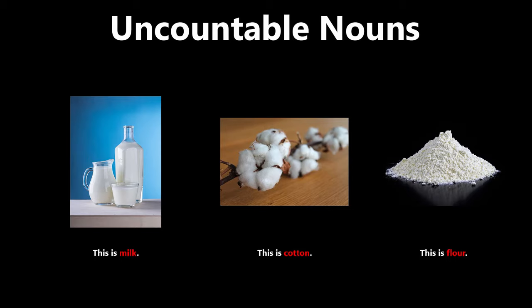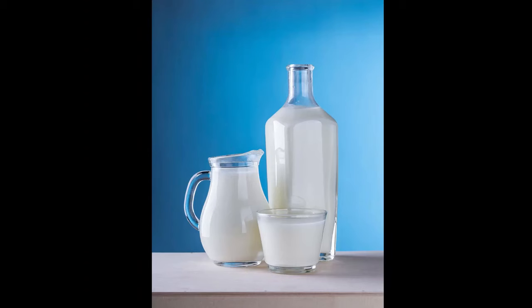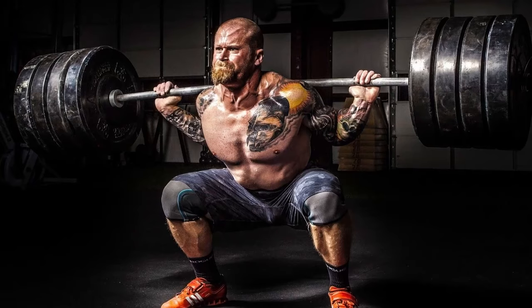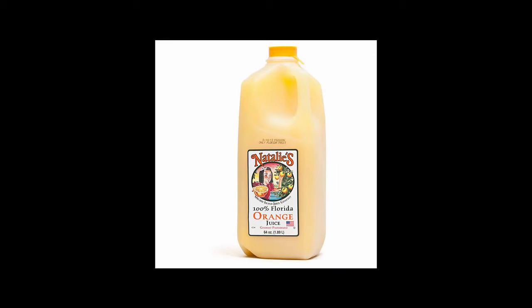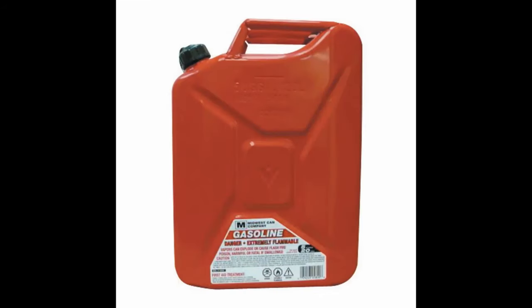But if you can't count these things, how do you talk about quantity? Saying 'this is milk' does not tell you how much milk. Well, there are many ways to do this — it depends on how you measure the quantity. For example, you can use weight, volume, or length. Two liters of orange juice. Five gallons of gasoline. A pound of butter.